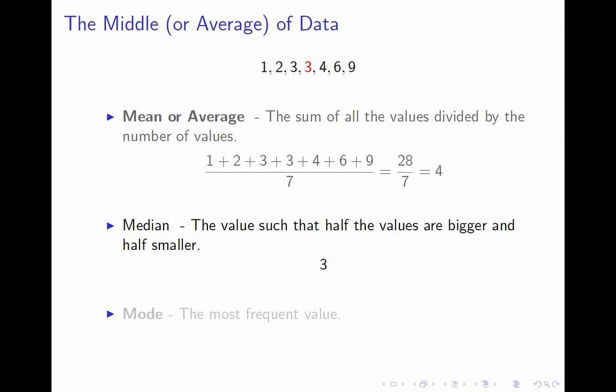The third measure — which we'll pretty much see once and never see again — is the mode. The mode is the most frequent value, the data value that occurs more often than any other. In this case the mode is also three because it occurs twice; all other numbers occur once. The mode isn't very useful because the mode of a sample will often have nothing to do with the mode of the population.